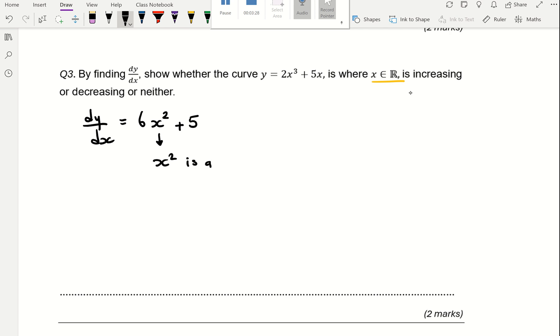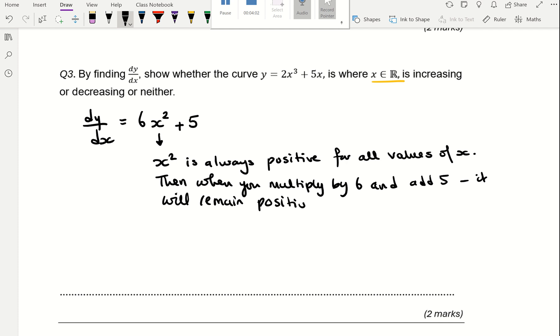x squared is always positive, or is positive for all values of x. Whether x is positive or negative, when you square it, it will be positive. Then when you multiply by 6 and add 5, it will remain positive for all values of x.